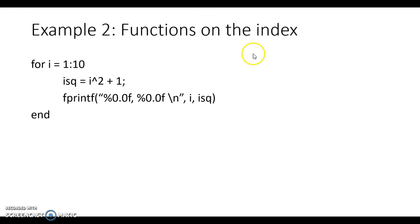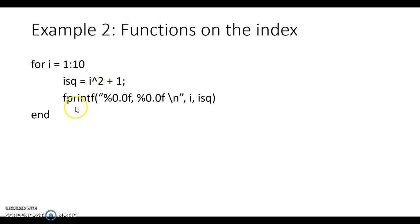Another thing I can do is perform functions on the index. I'll create a new variable called isq, which stands for i squared. When the loop iterates, I want to store in isq the value of i squared plus 1. I put a semicolon there because I don't want it to report isq each time — the semicolon suppresses the output. Then I'll use fprintf to print two values: the current index and isq, separated by a comma with a line break.